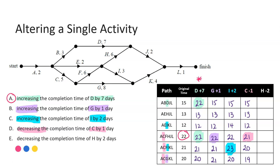Option D: decreasing C by one — subtracting one from any pathway containing C. Three paths are affected. All other paths stay the same. The maximum value there is 21 — only one critical path. Option E: decreasing H by two — H minus two. Paths containing H get the subtraction: second path 13 minus two gives 11; fourth path 22 minus two gives 20. Remaining paths stay the same. Our highest number is 21 — a new critical path, but no second path, it's still on its own. Therefore, we can be really confident that A is our best answer: increasing the completion time of D by seven days will give us two critical paths.